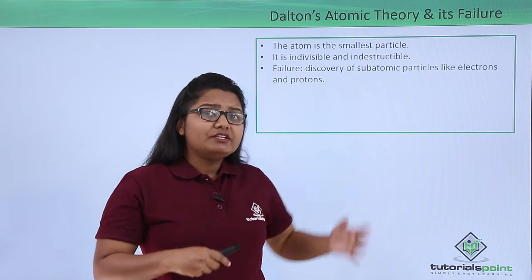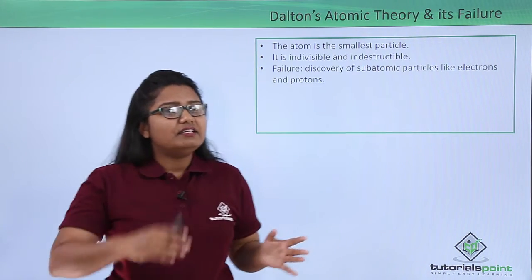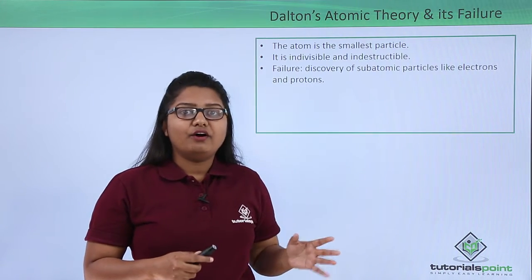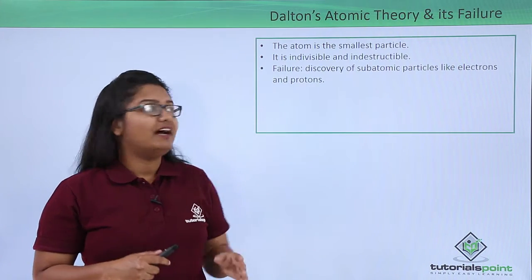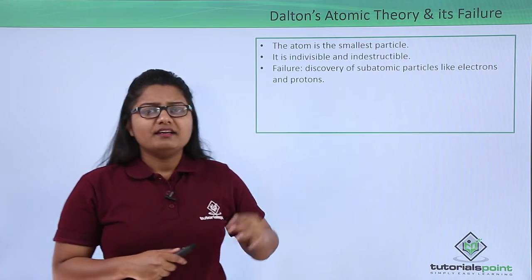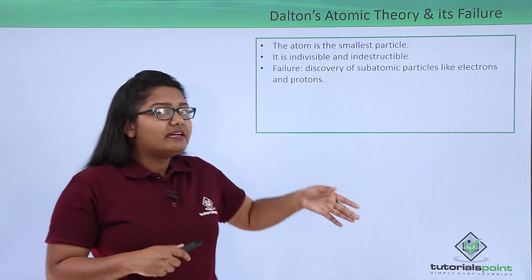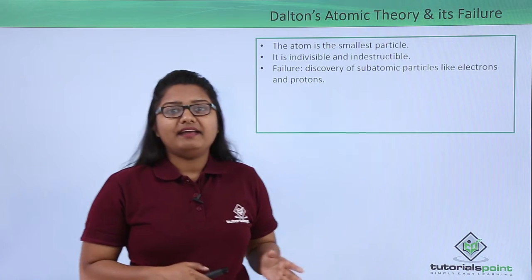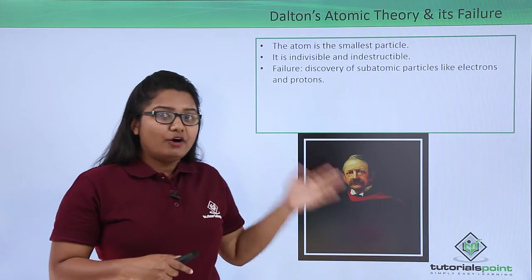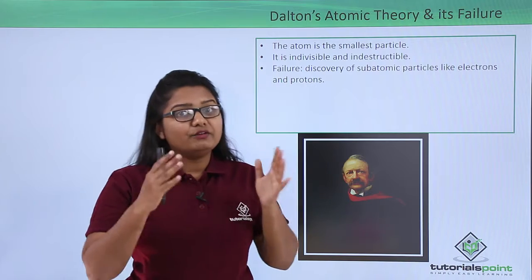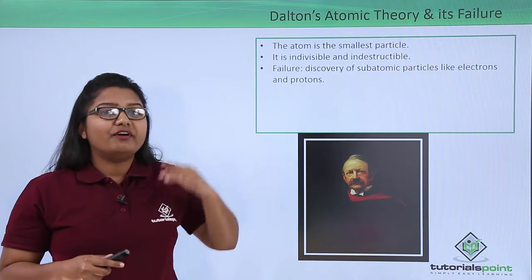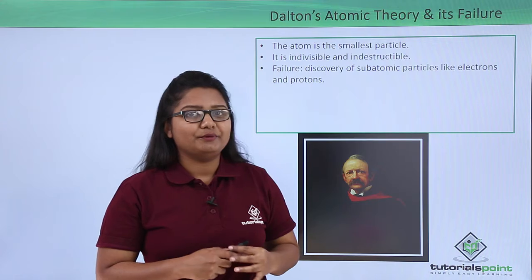But eventually this theory led to a failure because of the discovery of subatomic particles, which are electrons and protons. The subatomic particle — the electron — was discovered by a British physicist named J.J. Thomson, who was awarded a Nobel Prize in the year 1906 for his discovery of the electron.